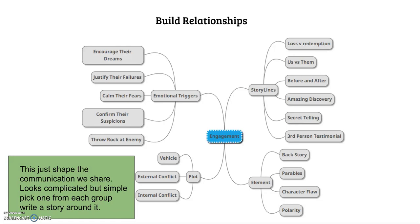So for example, if you start off with the emotional triggers, what emotions do we want to trigger inside of a person? You're going to pick one of those. So let's say we want to justify their fears. Then we're going to jump over to the storyline and look at how we want to shape the actual story that we're going to use to calm their fears.